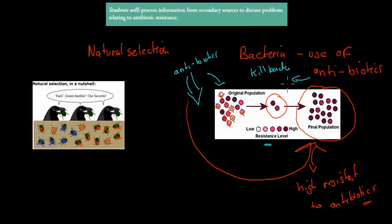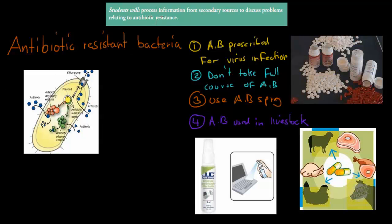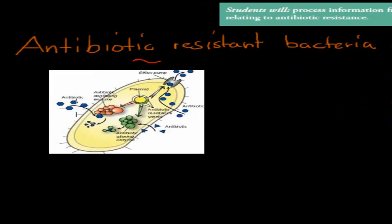This has been causing us many problems because many of our bacteria become resistant to the drugs we use against them. The dot point says students will process information from secondary sources to discuss problems relating to antibiotic resistance. So what is antibiotic resistance? Here in this picture you can see these blue things — the blue things are our antibiotics. They are meant to either kill the cell wall or prevent protein synthesis — different ways to make sure bacteria can't survive.